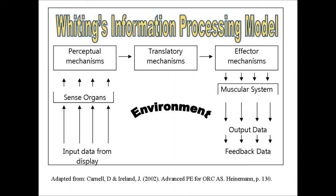Whitting's information processing model can be applied to skilled demonstrations and skill learning. The students observe the demonstration, which acts as the display. The sensory organs — in this case the eyes — pass the information to the brain. The perceptual mechanism interprets the demonstration, and then the translatory mechanism deals with receiving the input information and uses the memory of previous stimuli to decide upon a response.